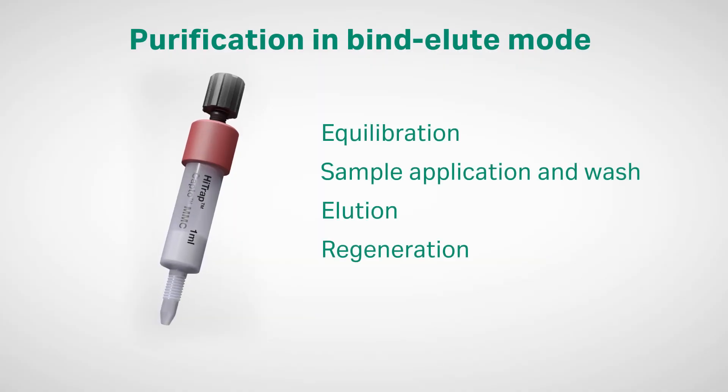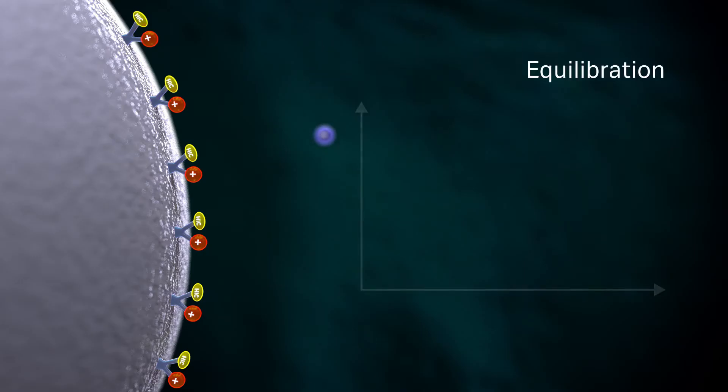Purification in bind-elute mode is performed in four main steps. The first step is the equilibration of the resin to the desired start conditions. When equilibrium is reached, all charged groups of the stationary phase are associated with exchangeable counter ions, such as chloride or sodium.